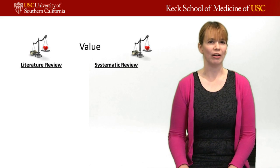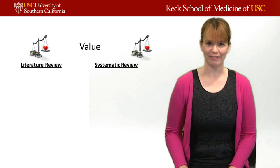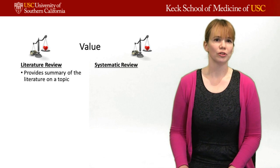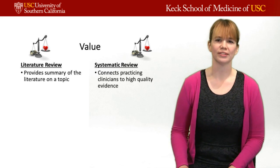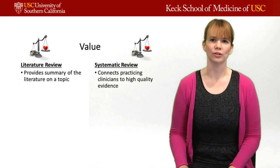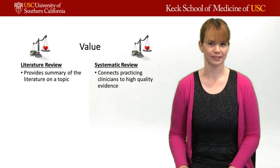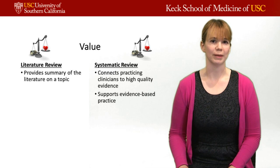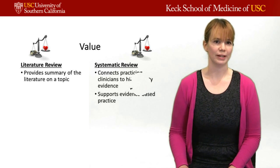What's the value of these literature types? A literature review provides a summary of literature on a topic. Whereas a systematic review connects practicing clinicians to high-quality, succinct evidence and supports evidence-based medicine — you can actually use a systematic review to treat a patient.